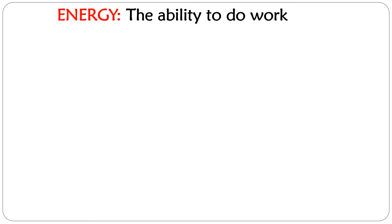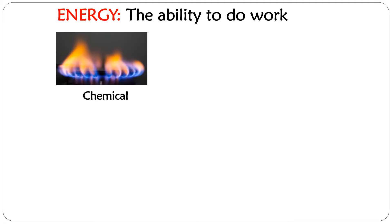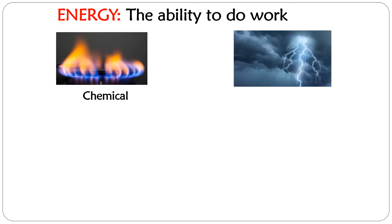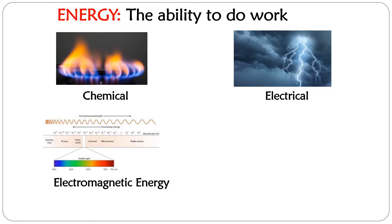Some of the different forms of energy include chemical energy, which is the energy released or absorbed as a result of a chemical reaction. We can also have electrical energy, which is the energy created as a result of the movement of electrons between different shells.